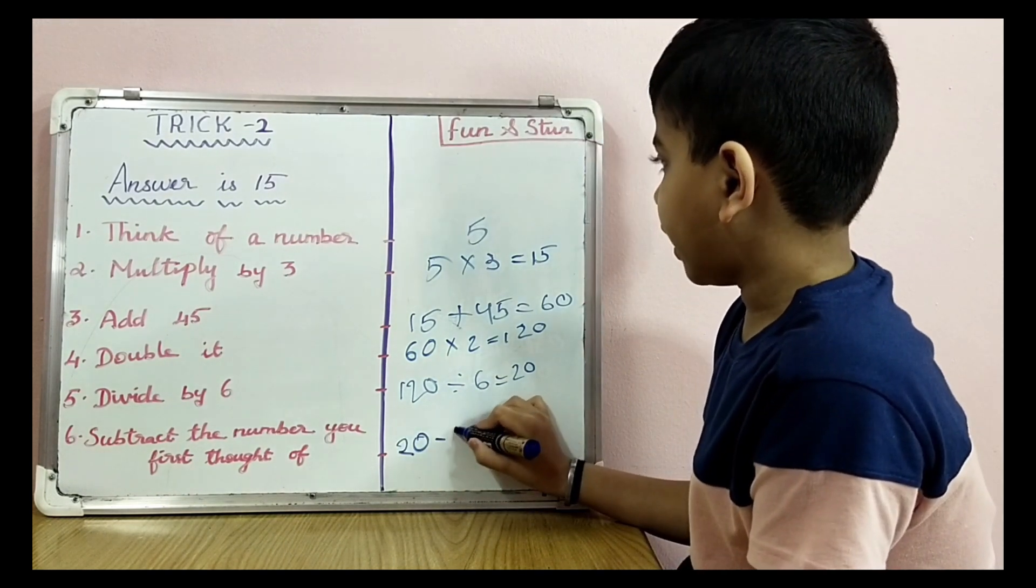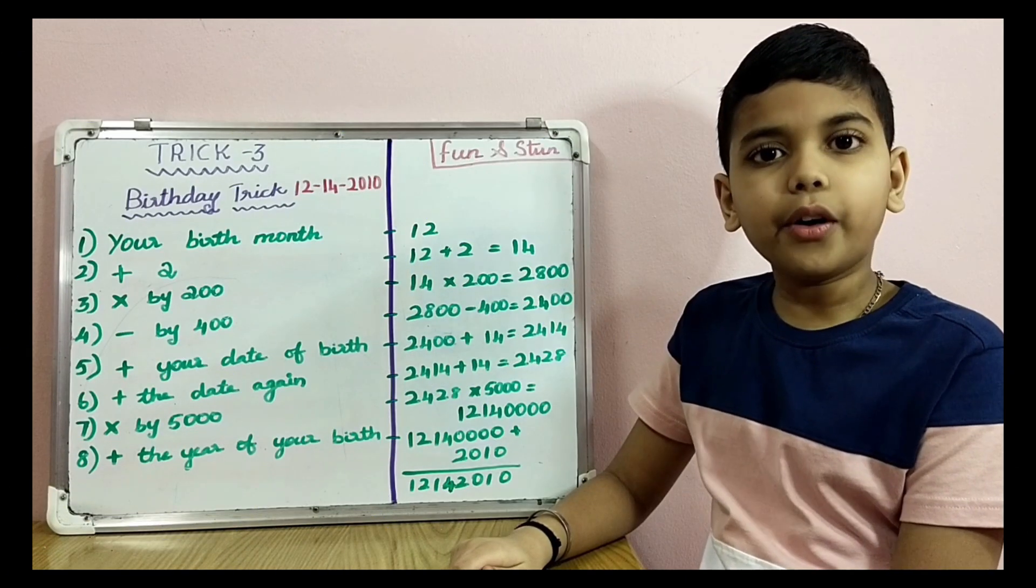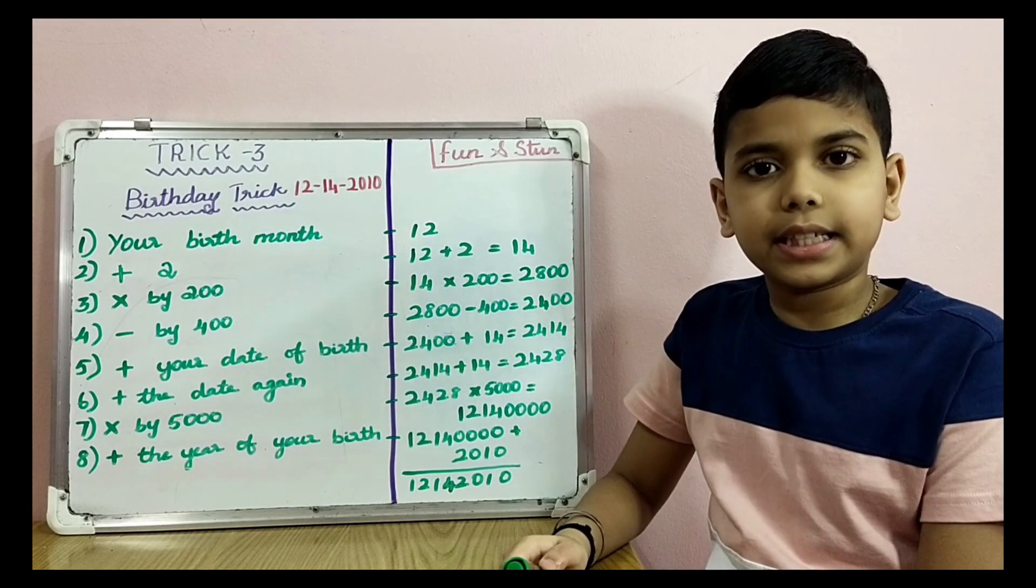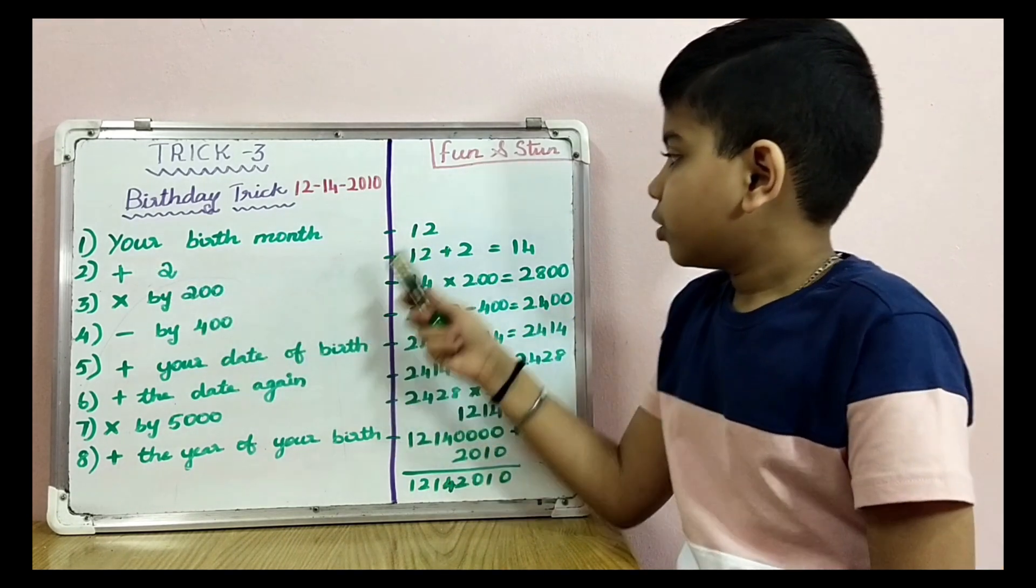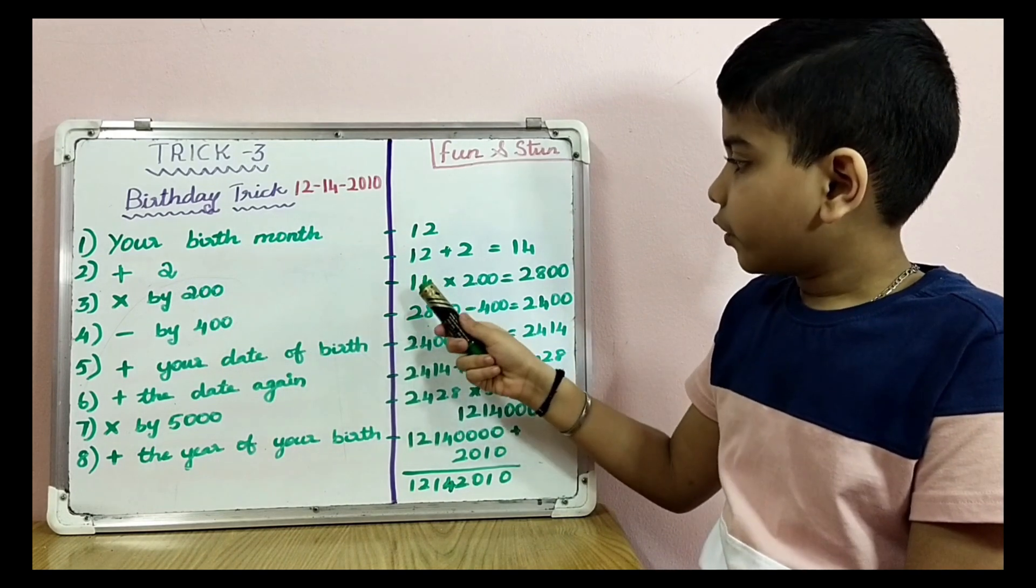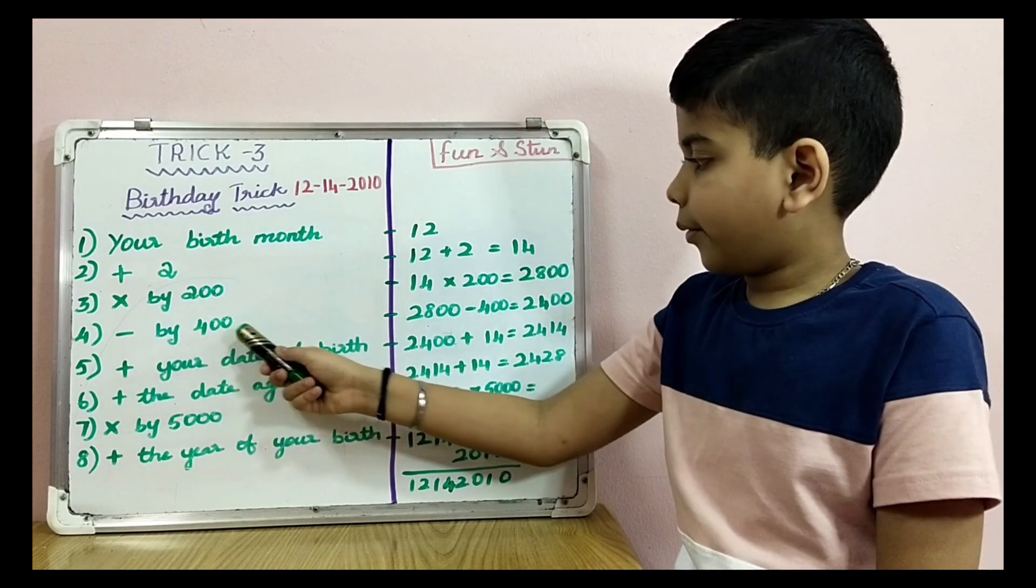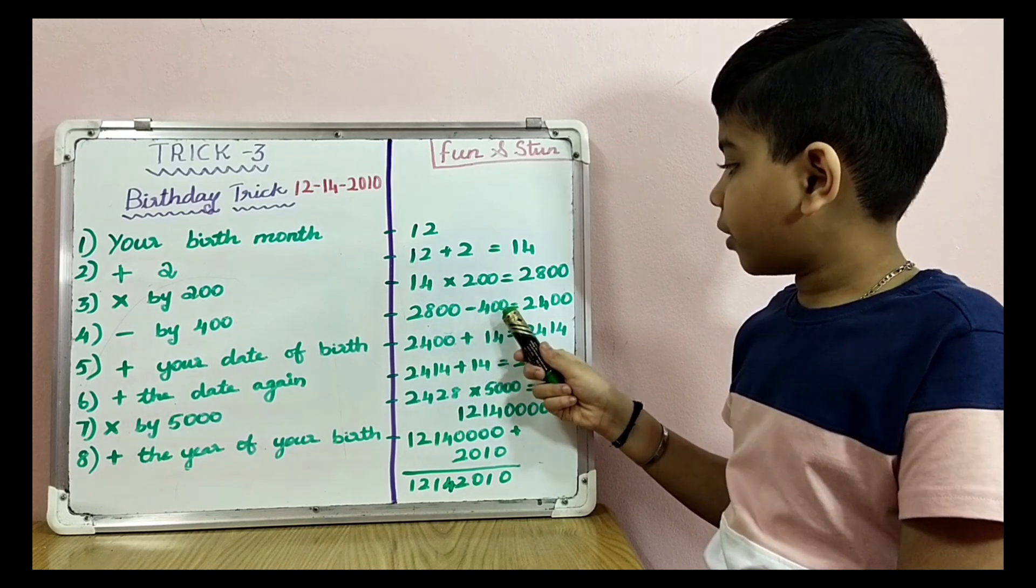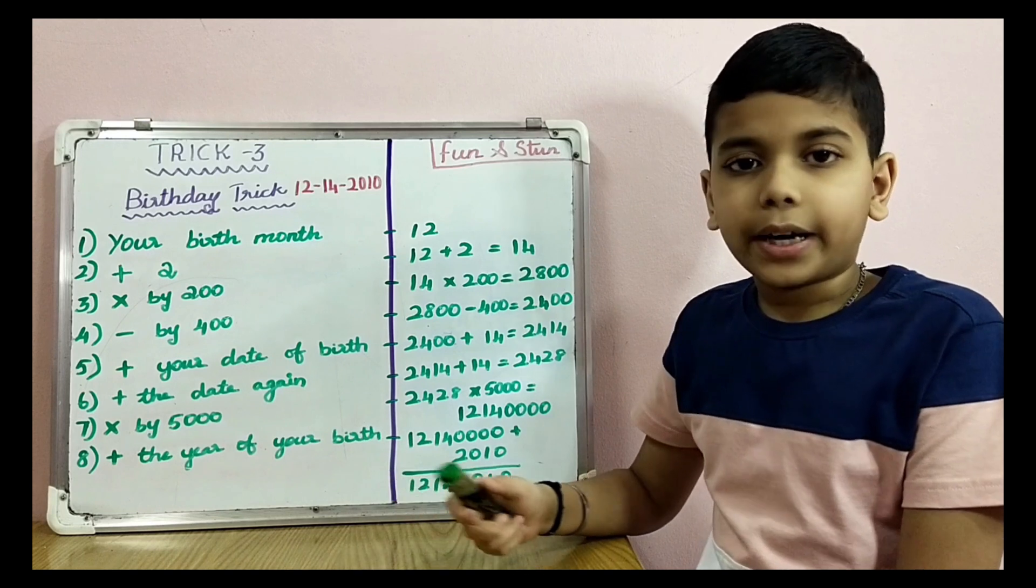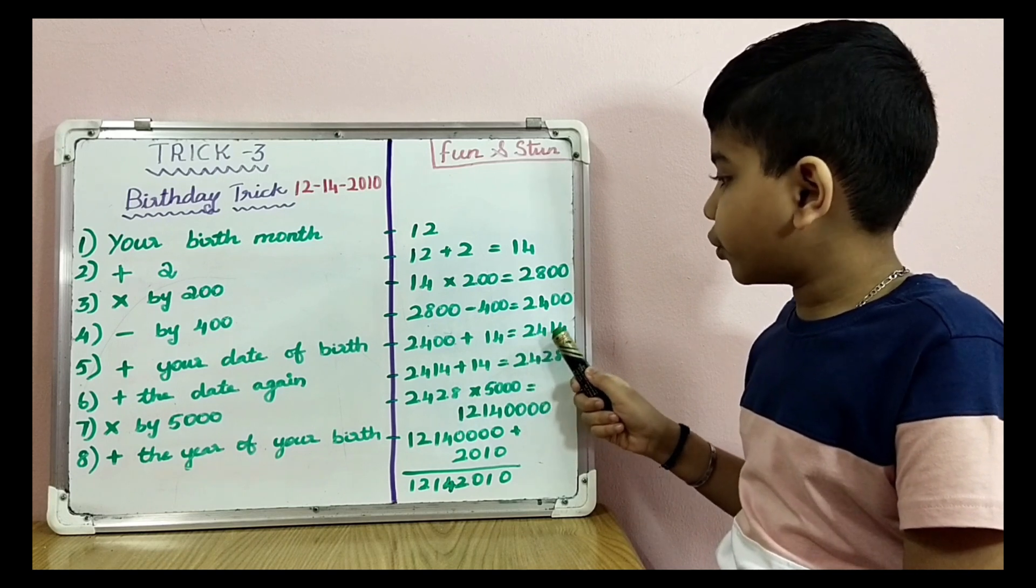Now let's move on to an interesting birthday trick, Trick 3. Your birthday month: my birthday month is December, so 12. Add 2: 12 plus 2 equals 14. Multiply by 200: 14 multiplied by 200 equals 2800. Minus 400: 2800 minus 400 equals 2400. Add your date of birth: my date of birth is 14, so 2400 plus 14 equals 2414.